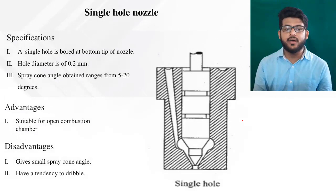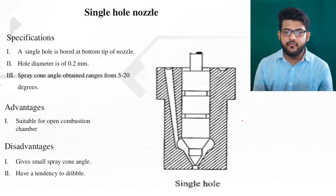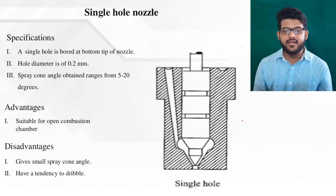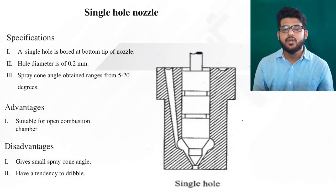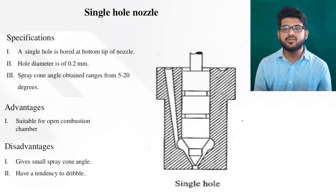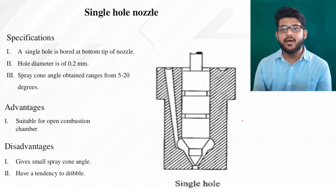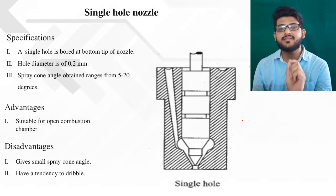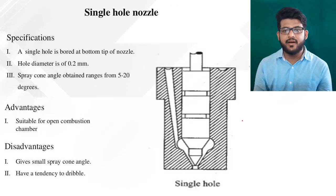The spray angle obtained from the single hole nozzle is from 5 degrees to 20 degrees. The advantage is that it is suitable for open combustion chambers and gives a very small spray angle. However, its disadvantage is that it has a tendency to dribble — because there is only one hole, fuel can remain inside and not fully exit the nozzle.